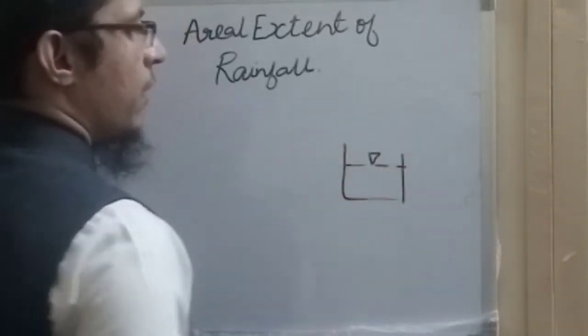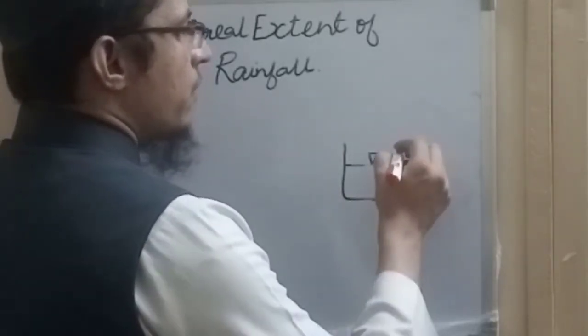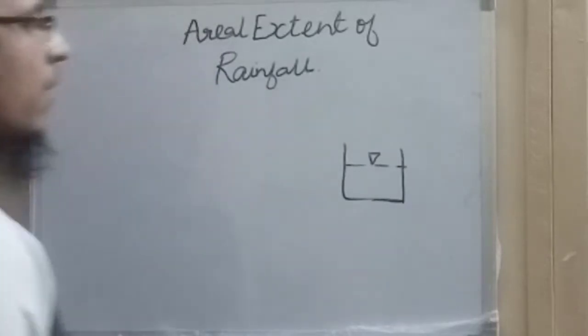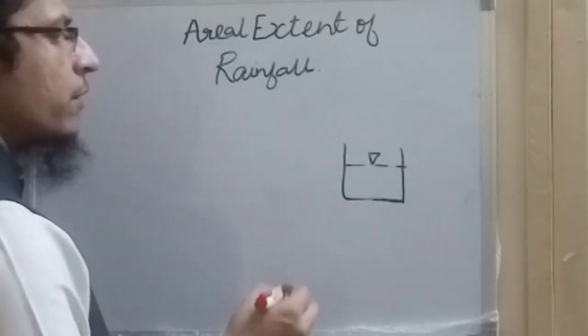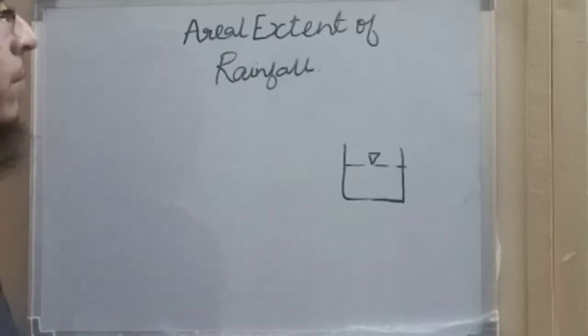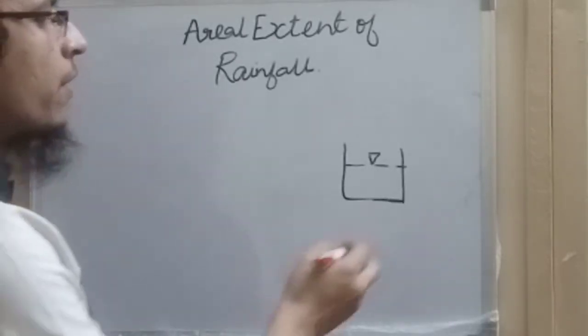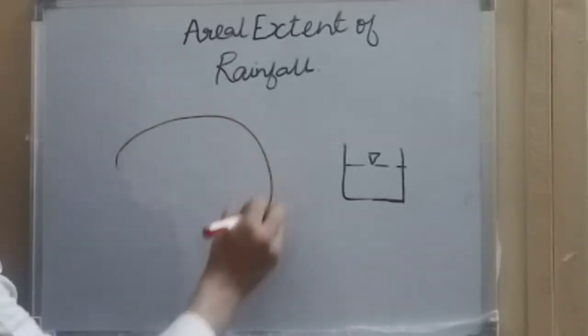In a particular storm and area, we can determine the intensity of rainfall, whether it was continuous or stopped in between, and the total depth in single and multiple storms. All this information can be obtained from recording rain gauges.